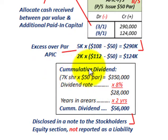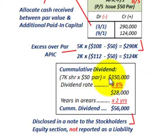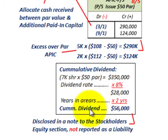Now let's look at the cumulative dividend owed on this stock. To calculate it, we take five thousand plus two thousand shares — seven thousand total shares issued — times the fifty dollar par value, giving three hundred and fifty thousand dollars. The eight percent annual dividend rate times three hundred and fifty thousand equals twenty-eight thousand dollars per year. With two years in arrears, that gives us a cumulative dividend of fifty-six thousand dollars.